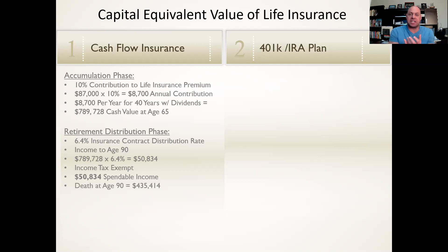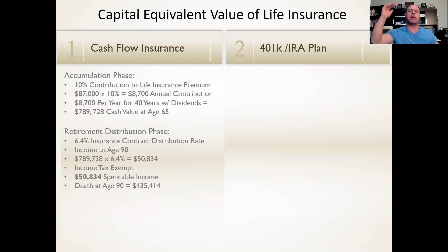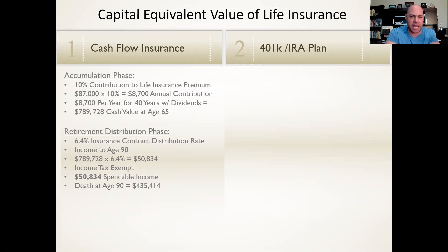There's a death benefit attached to this, of course, because it is life insurance. During his working years, his death benefit is way higher — well over a million dollars at its peak. But when he begins to draw against the policy in retirement, that death benefit will come down. If he were to die at age 90, he would still have $435,000 to leave to his family, and they wouldn't pay a cent of income tax. So the gentleman will give the insurance company a total of $350,000. In retirement, he's going to receive $1.3 million of cashflow and not pay a cent of income tax. And his family will receive over $400,000 of death benefit, income tax-free.